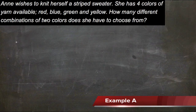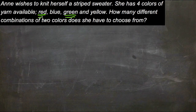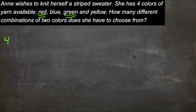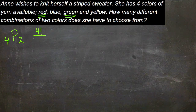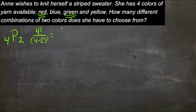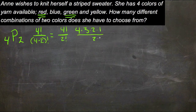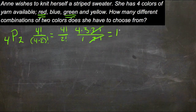Now if we were going to do this as permutations — if order mattered, in other words, if she chose red and then green, or she chose green and then red, and those both counted as separate choices — then we'd have a pick-choose situation. She'd have four possibilities and she'd be picking two of them. So we would do 4 factorial over (4 minus 2) factorial, which gives us 4 factorial over 2 factorial, or 4 times 3 times 2 times 1 over 2 times 1. Those cancel, giving us 4 times 3, so a total of 12 possibilities.